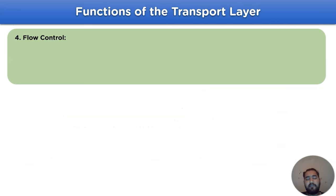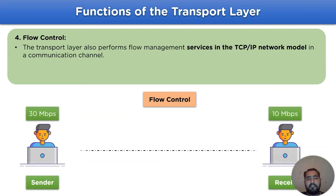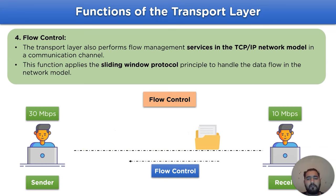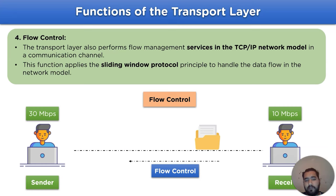The next function is flow control. The transport layer performs flow management services in the TCP/IP network model in a communication channel. This channel applies the sliding window protocol principle to handle the data flow in the network model. To know more about the sliding window protocol principle, you can watch our previous videos.